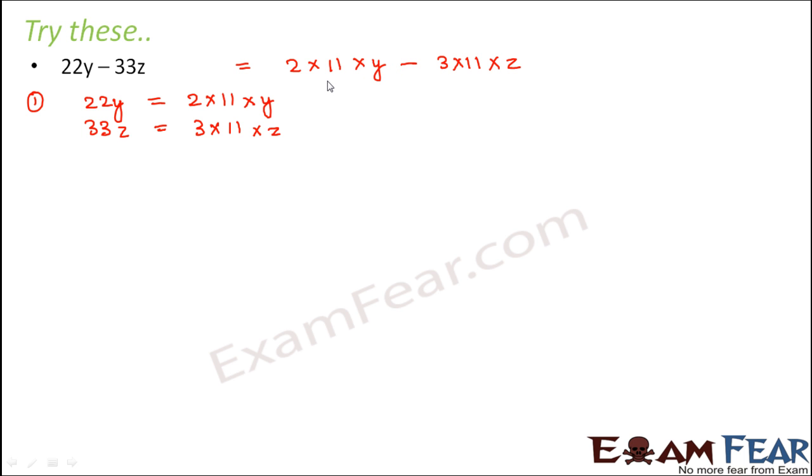If you look at these two, do you have anything in common? Yes, we have 11 in common. So 11 is common in both of these, and 11 is behaving like a. In this case, it is a into b minus a into c, so this can be written as a into b minus c.